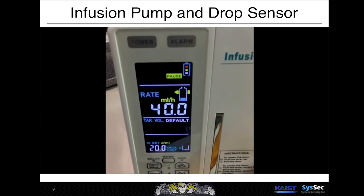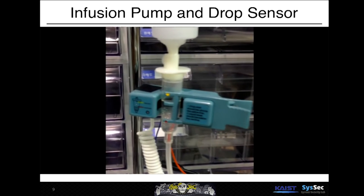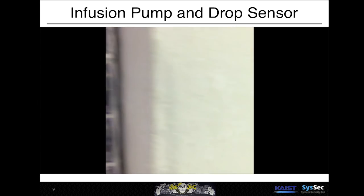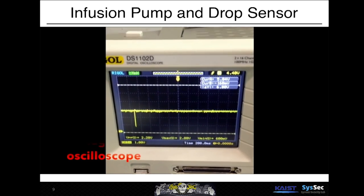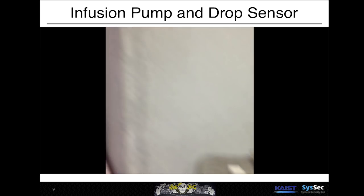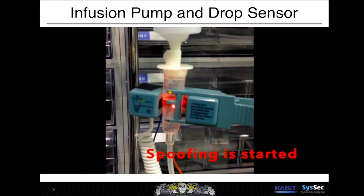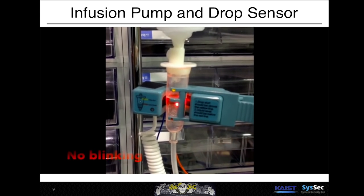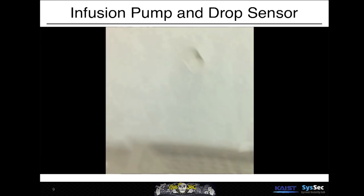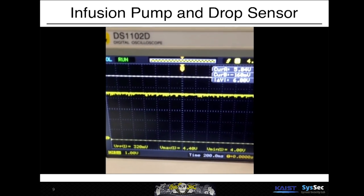Let's turn on the infusion pump. The rate is set to 40 milliliters per hour. When there's a drop, the LED blinks. Looking at the oscilloscope, you will see a voltage drop. Now let's turn on the red laser pointer. The graph in the oscilloscope shifted upwards, and it no longer detects any drop because the receiver is saturated.